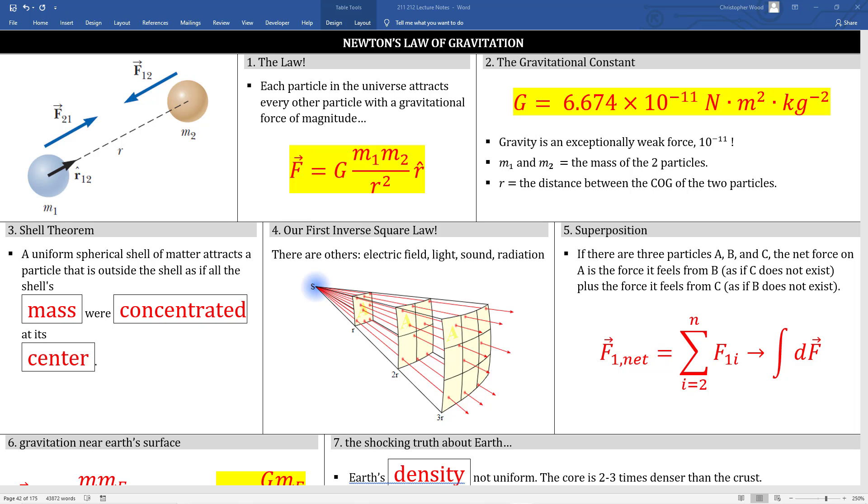Chapter 13, Gravitation. Every particle in the universe attracts every other particle with a gravitational force given in box 1. This is known as Newton's Law of Universal Gravitation.